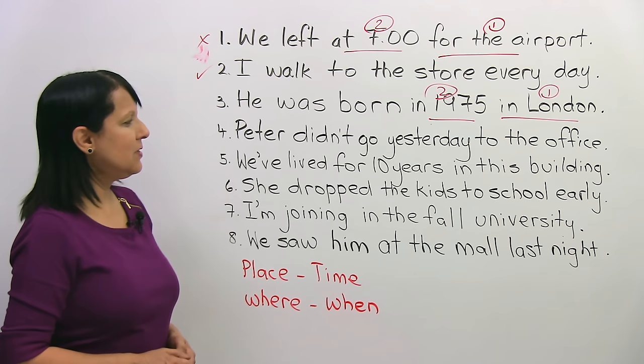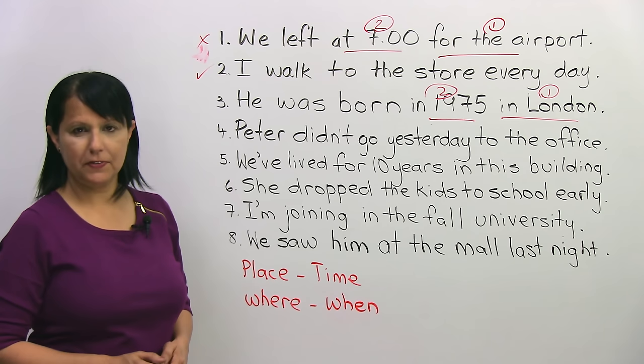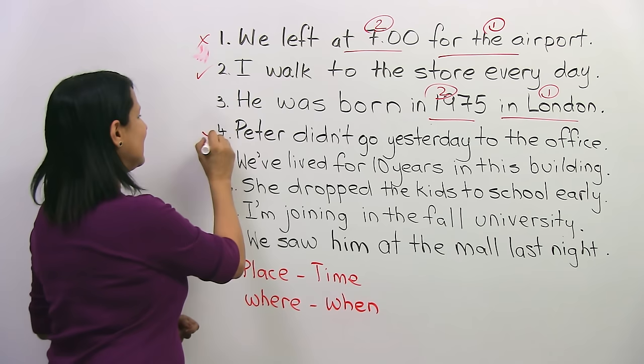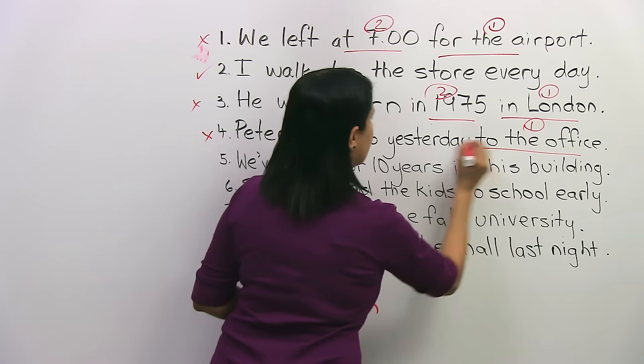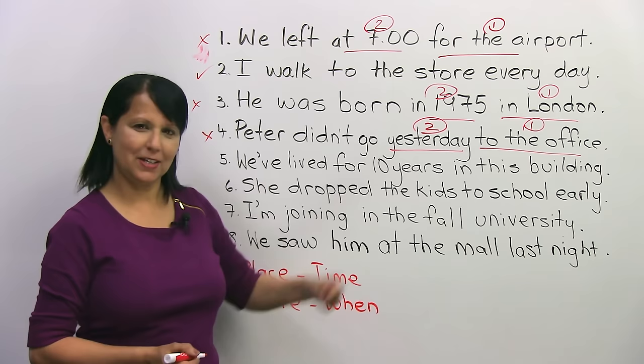Number four: 'Peter didn't go yesterday to the office.' Is it right or wrong? It's wrong. Peter didn't go where? To the office. When? Yesterday. So it should be: 'Peter didn't go to the office yesterday.' Are you starting to see the rhythm of it?